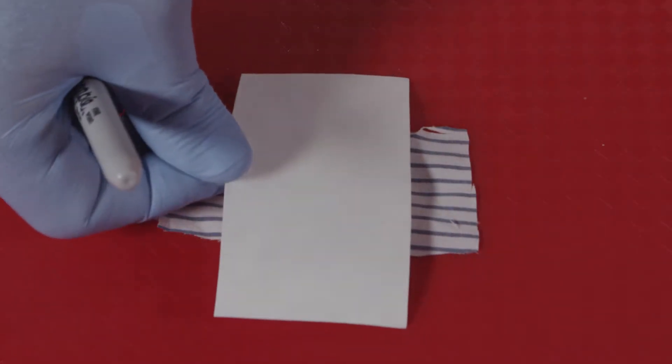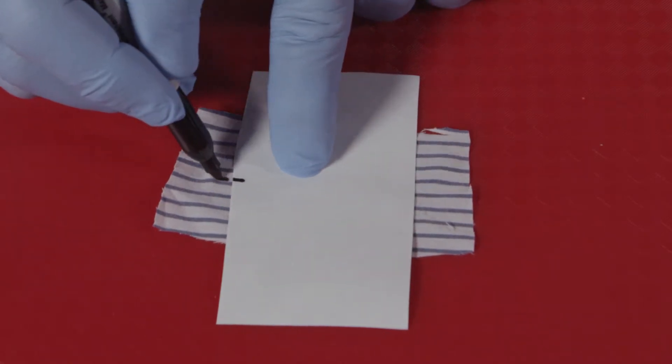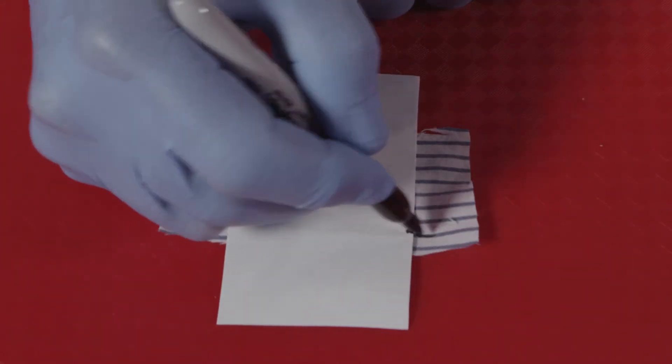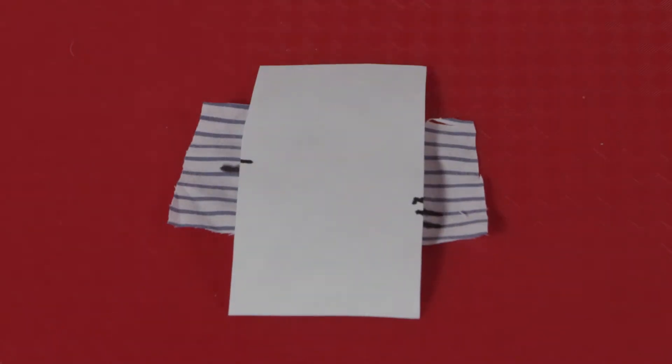It is a presumptive test for saliva that allows for mapping the stains of interest for further analysis using the Ceratec amylase card. The enzyme alpha amylase is present in very high levels in saliva and its ability to digest starch lends itself for detection very easily in dried stains.